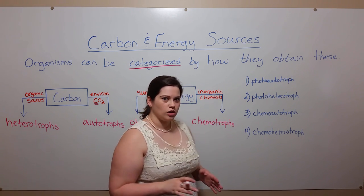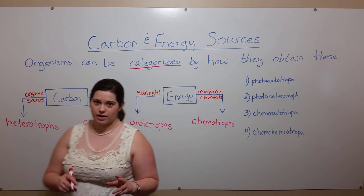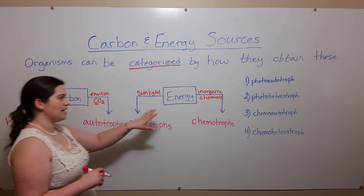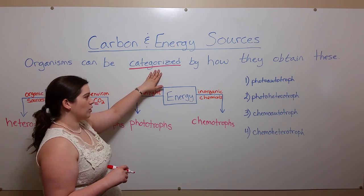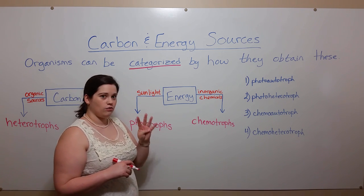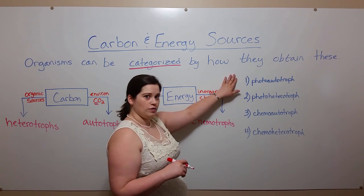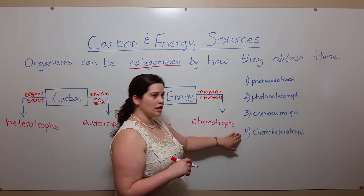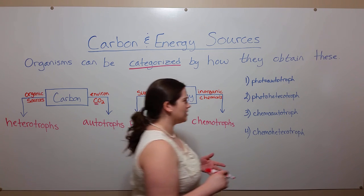Now of course all organisms need both of these things — carbon and energy. This means that these categories can be combined to create four different types of organisms: photoautotrophs, photoheterotrophs, chemoautotrophs, and chemoheterotrophs. Let's talk about some examples of each one of these.